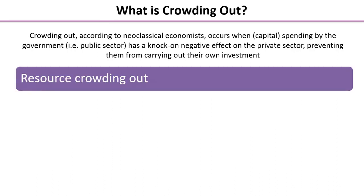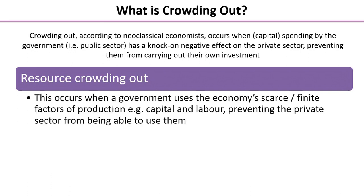There are effectively two types of crowding out. The first is resource crowding out, which occurs when a government uses the economy's scarce or finite factors of production — for example, capital and labor — which simply prevents the private sector from being able to use them. Back in 2012 when we hosted the London Olympics, loads of security guards, portable toilets, and crowd control barriers were used all around London, and that prevented many private sector organizations from running their own big events.